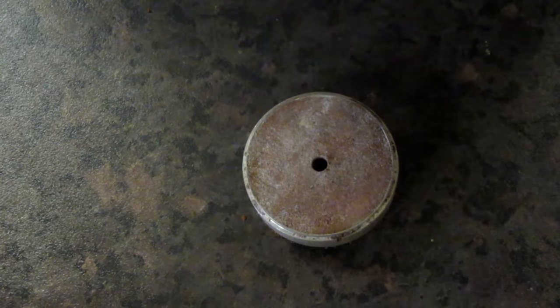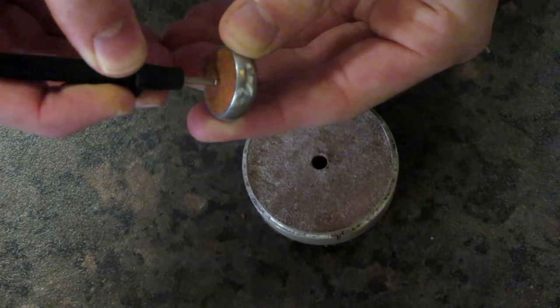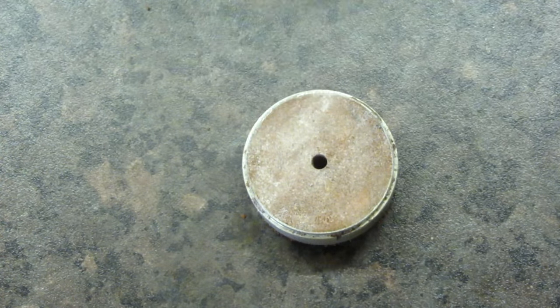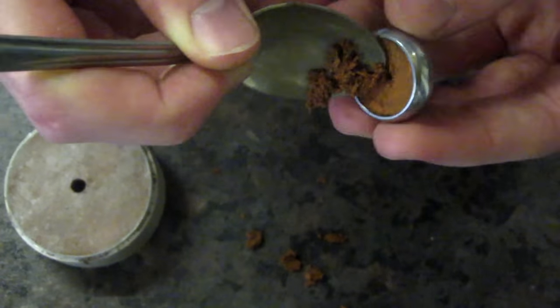The next step is optional but I find it reduces mess and makes life a lot easier later on. I packed some green sand into a small ring and using a pin or nail I created a hole which goes all the way through. Then I used a spoon to create a funnel where I will pour the metal.